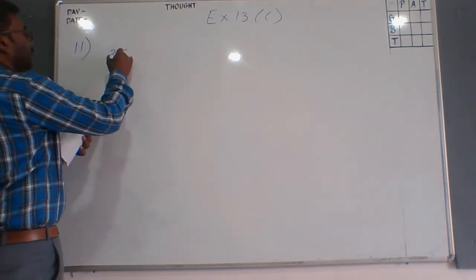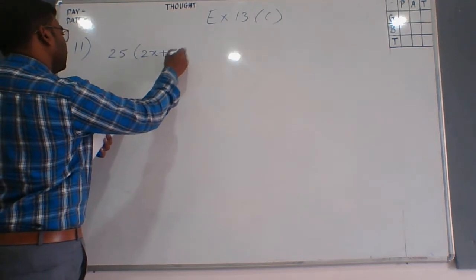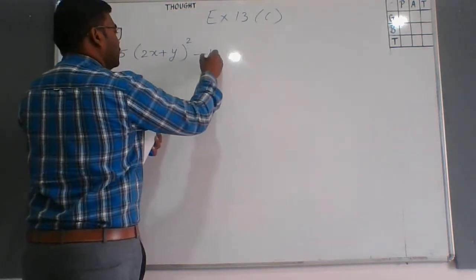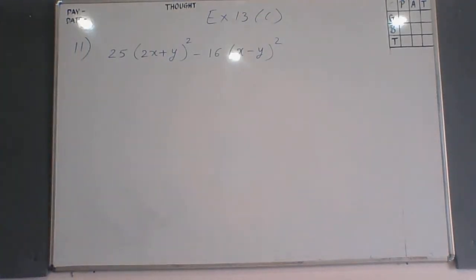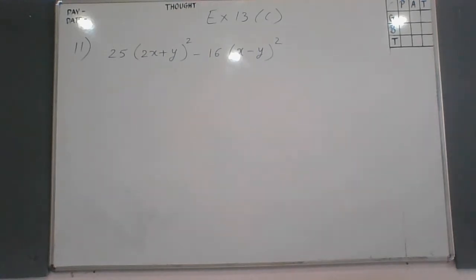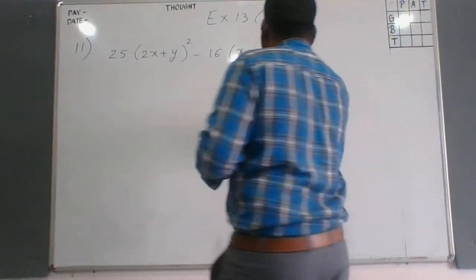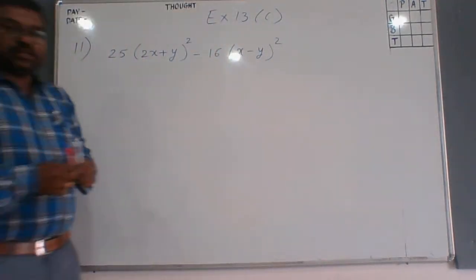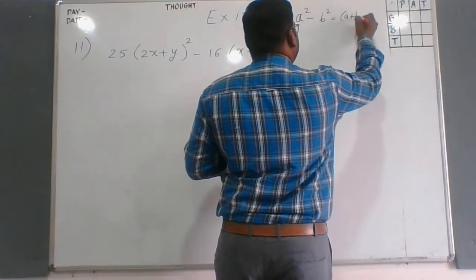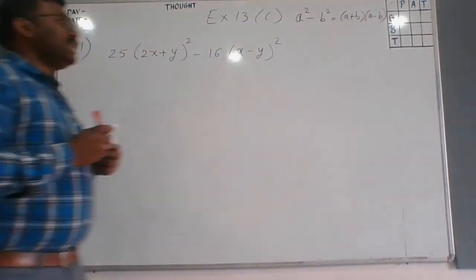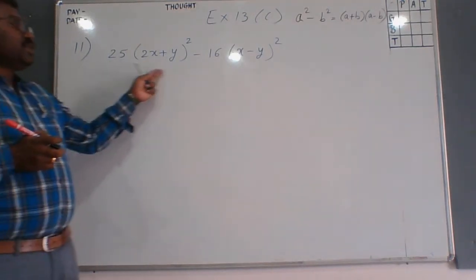Question 11 is: 25(2x+y)² minus 16(x-y)². We have to apply the identity learned in the previous session: a² minus b² equals (a+b)(a-b). We are going to apply the same identity here.